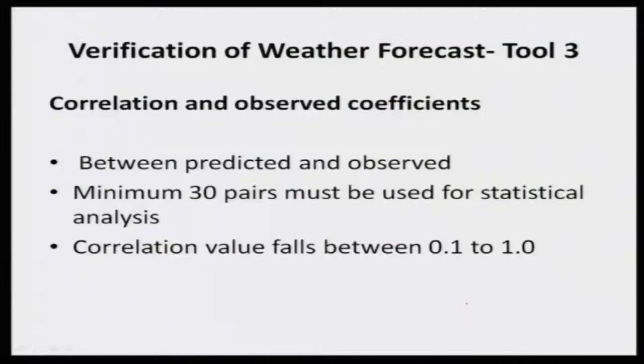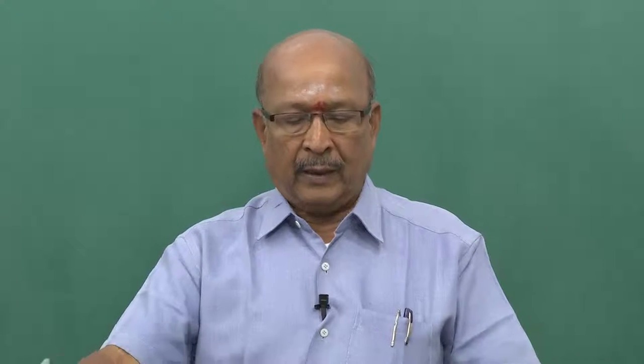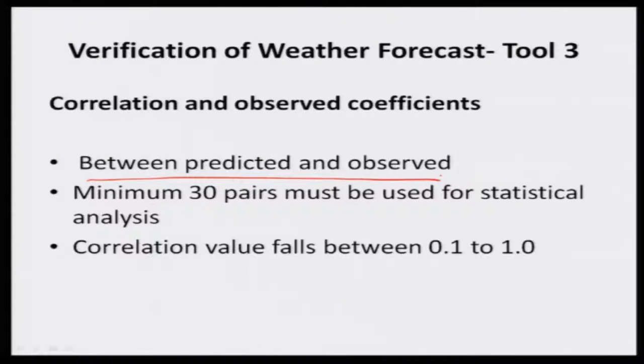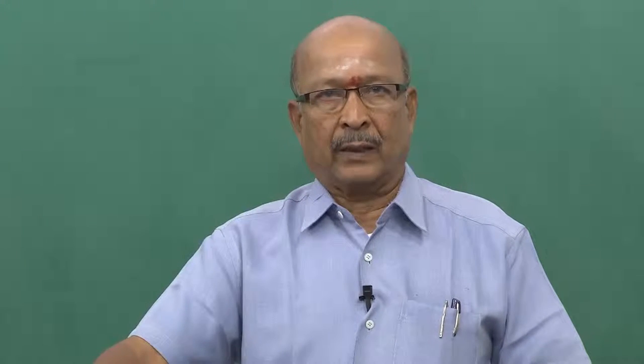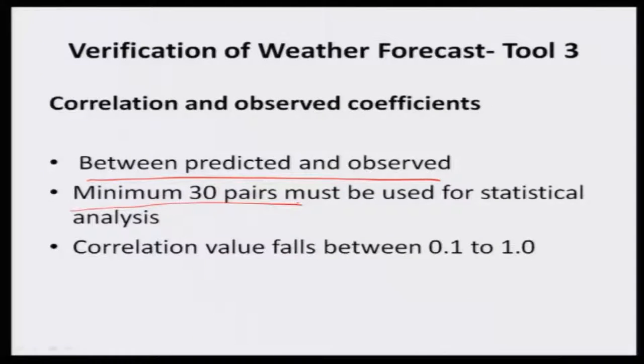The third tool is correlation and the correlation coefficient. This is very simple. In every software, you can find this type of analysis between predicted and observed values. Correlation proves the relationship between two things — your predicted and observed. When you take the intensity of the relationship, we go for regression analysis. Simple correlation means the association between two paired datasets: one predicted, one observed. A minimum of 30 pairs are required; otherwise you may get an erroneous result. The correlation value goes from 0.1 to 1 — when the value is 0.9 you have better forecast accuracy; when 0.2, it is less reliable.